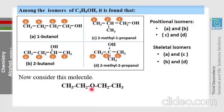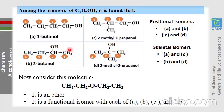Now consider an ether molecule. It has a different functional group from the alcohols but the same number of carbon, hydrogen, and oxygen atoms — meaning the same molecular formula. We say this ether is a functional isomer of each of A, B, C, and D.